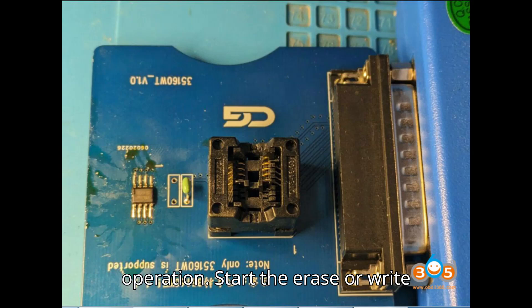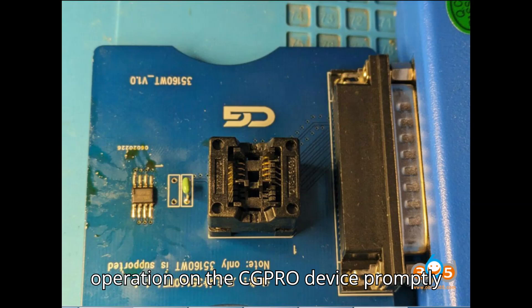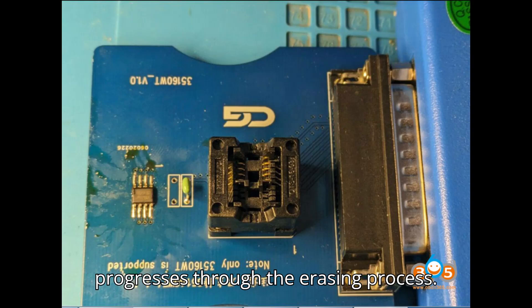Step 3: Initiate Operation. Start the erase or write operation on the CG Pro device promptly after installing the heated chip. Monitor the software to see if the chip progresses through the erasing process.